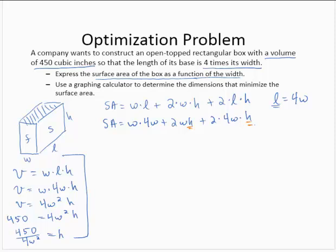So now I can replace h with the 450 over 4w squared. And we now have the surface area as a function of width. Let's see, w times 4w is 4w squared plus 2w times 450 over 4w squared, and then I'd have plus 8w times 450 over 4w squared. So there we have the surface area.